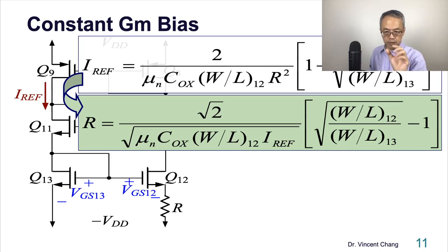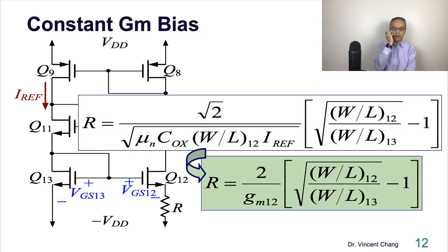vGS13, due to KVL, is greater than vGS12, right? Because the difference between the two vGS is the drop across R. So vGS12 is smaller. In order to create the same current, the ratio, the geometry, the W over L ratio should be larger. This is why we flipped - it becomes the square root minus one instead of one minus square root shown on the previous slide. All right, so here's the R.